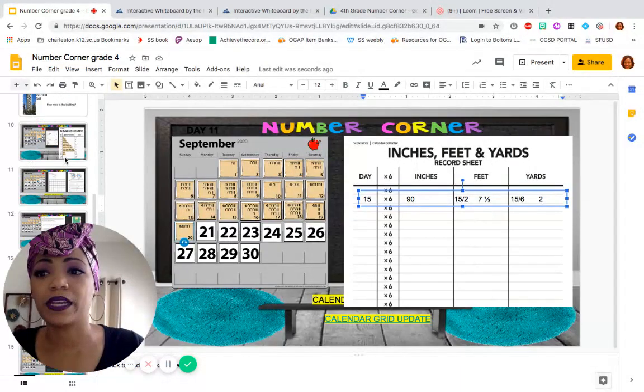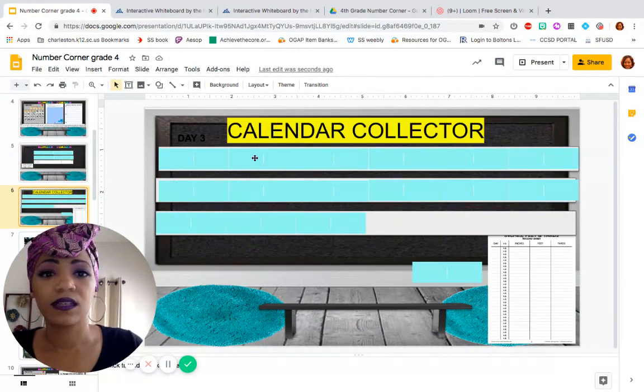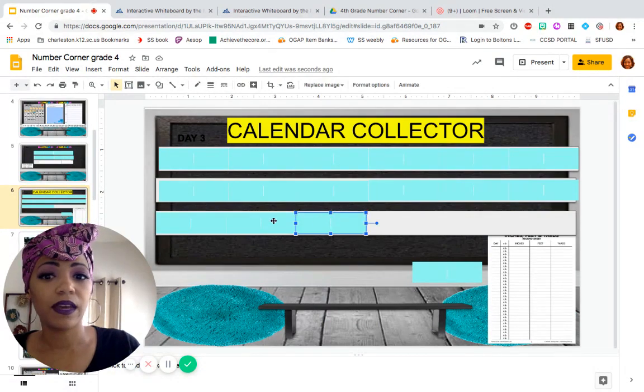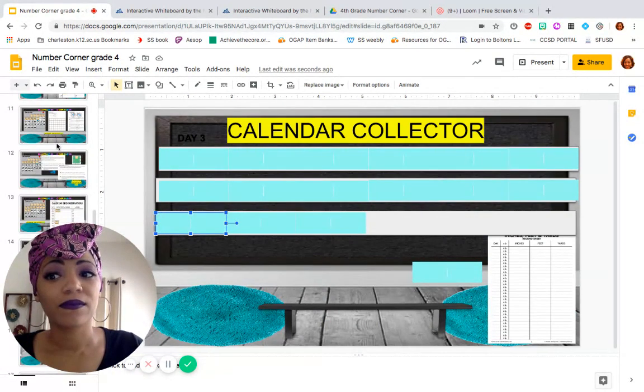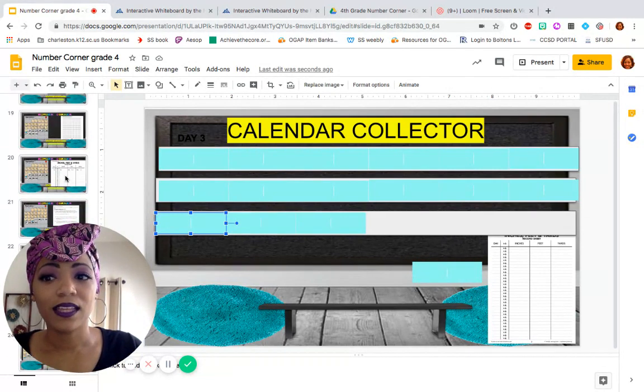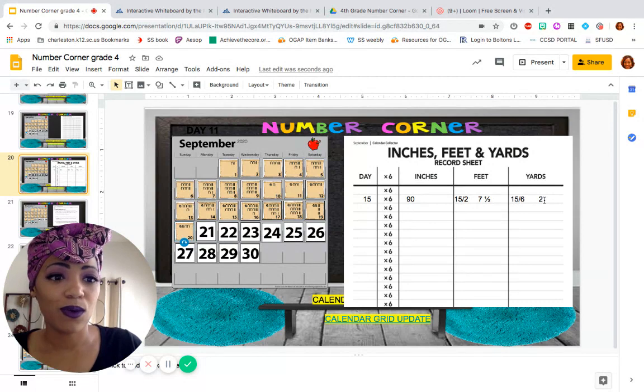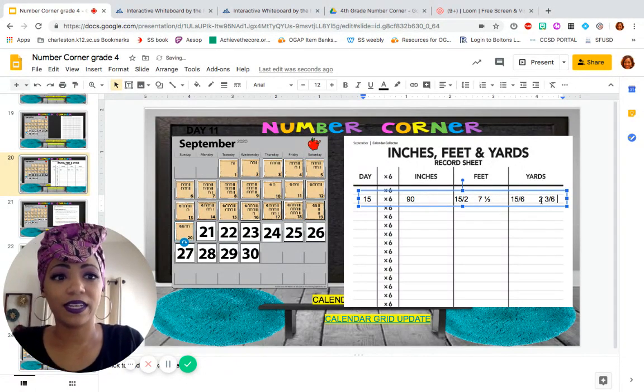Let's look at it. Just to refresh your memory. Here it is. Our 2 full yards. And, then we have 3 more. So, that would be, right, 2 yards and 3 sixths. Or, we could write that as 2 and a half. Very good.